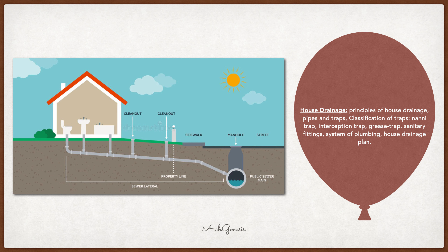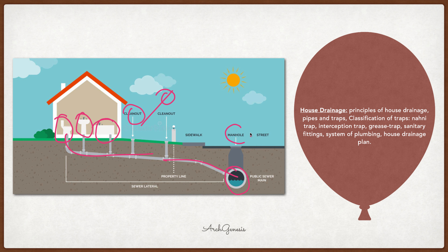In normal life, we produce some waste from sources like WC, washing machine, sink, kitchen, and other things. This waste is connected through a pipe and ultimately goes to drain — it is connected with the drainage system or manhole, or finally connected to a river and dumped there. This whole system is called the drainage system.